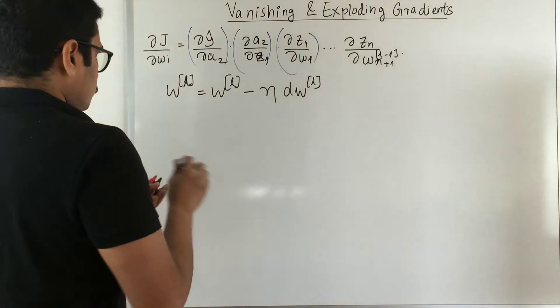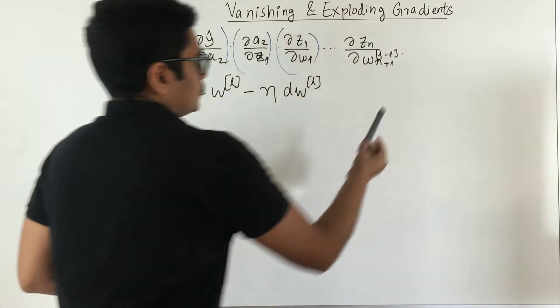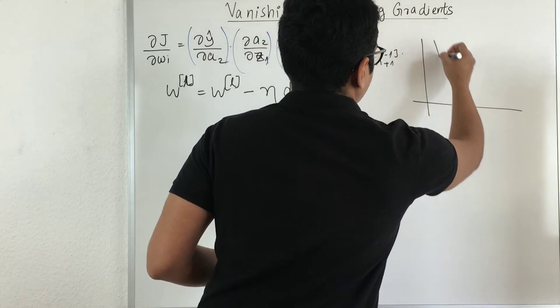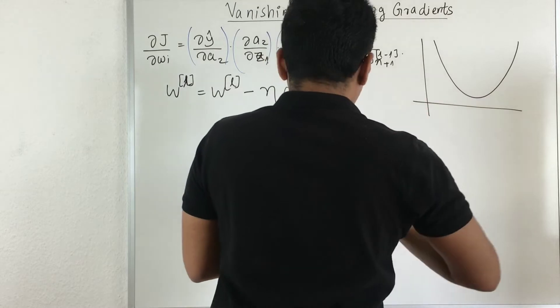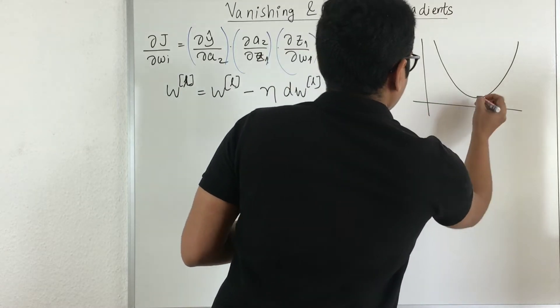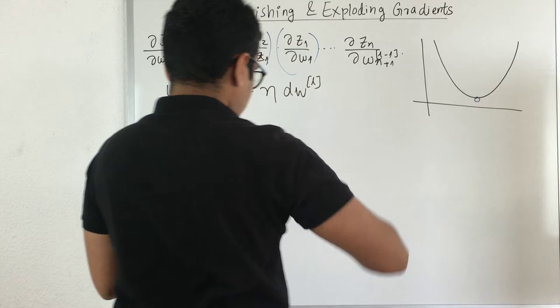If we want to represent this geometrically, say we have our coordinate axis and we have our gradient like this.